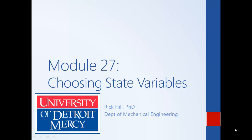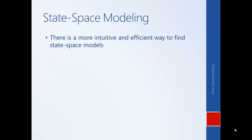In the previous example we were able to put our system into state-space form by a simple change of variables — essentially blind mathematical manipulation. It turns out there are better ways to choose our set of state variables, i.e. better ways to put our system into state-space form. If we blindly do this change of variables, we may end up using more state variables than are necessary — a larger set of equations than we need.